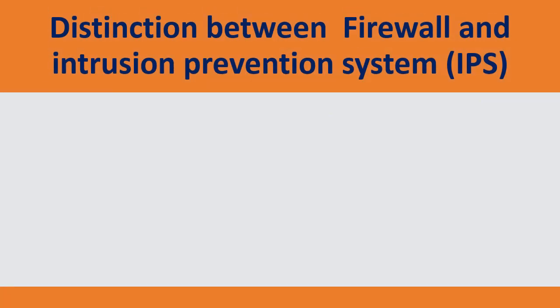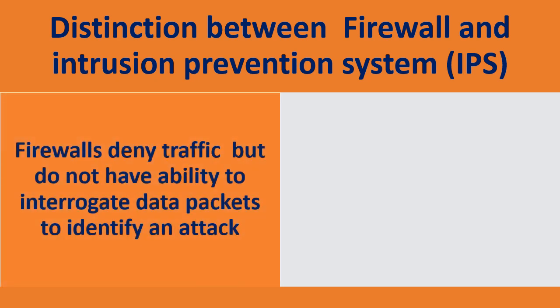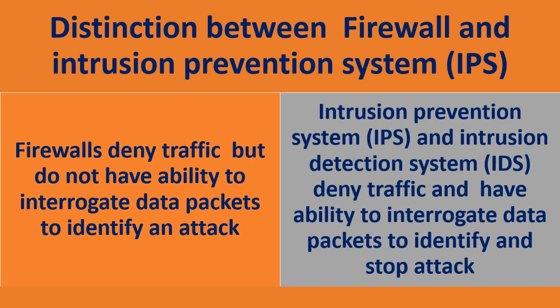Distinction between firewall and intrusion prevention system, IPS. Firewalls deny traffic but do not have the ability to interrogate data packets to identify an attack. But intrusion prevention system, IPS, and intrusion detection system, IDS, deny traffic and have the ability to interrogate data packets to identify and stop an attack.